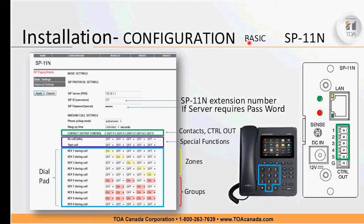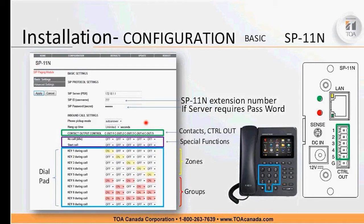On the Configuration page under Basic, this is where most of your work is done. It shows your phone router address and extension. If your phone router requires a password, enter it here so the handshake can happen. It's always auto-answer since it's a paging system. Hang-up time adjusts when calls will terminate — it goes in five-second steps from 5 to 30 seconds, or you can set it unlimited so the call goes indefinitely.